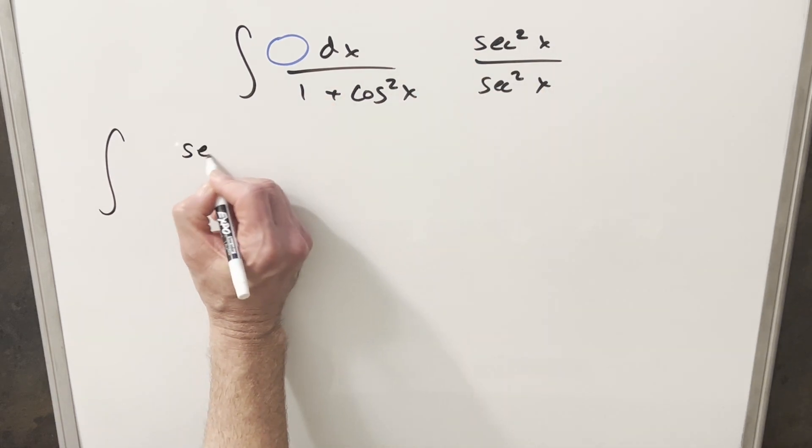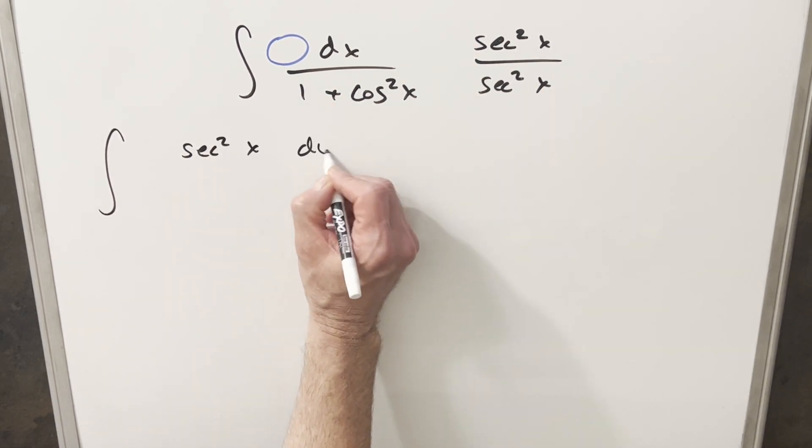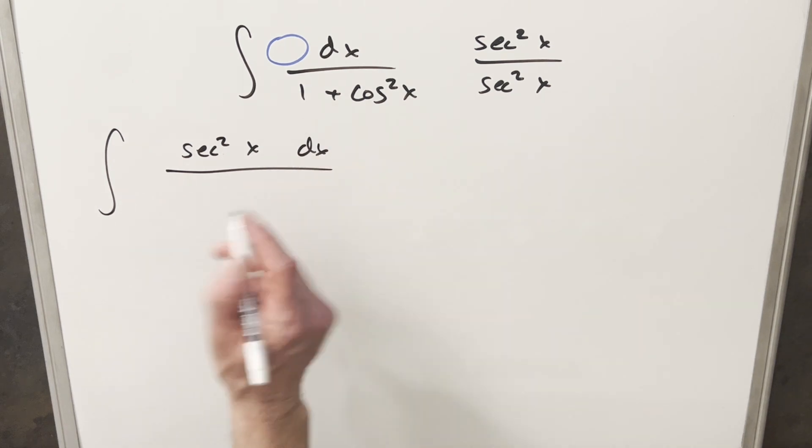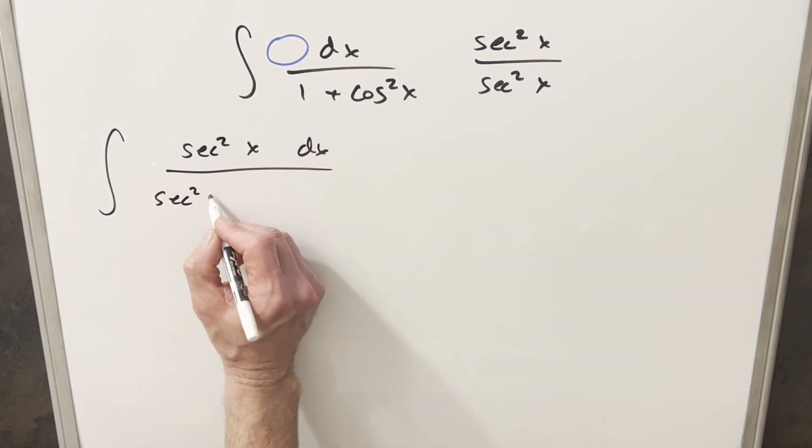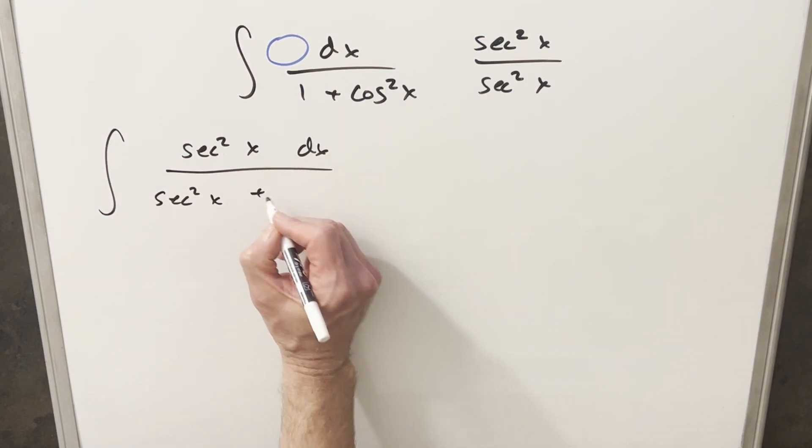Multiplying it on the numerator, we're going to have secant squared x dx. Secant squared x times 1, we'll have a secant squared x over here, and again, this part's just going to be 1.